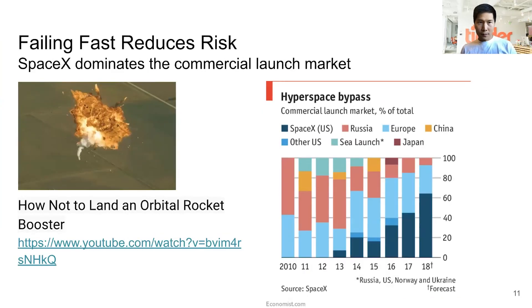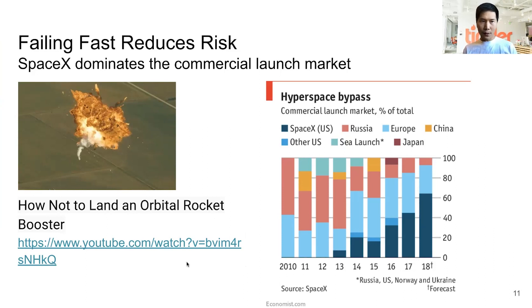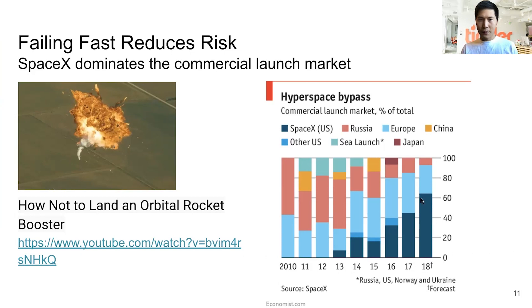Failing fast reduces risk. SpaceX now dominates the commercial launch market, but it took a lot of explosions and failed rocket launches to get there. They put together a compilation of all their rockets exploding in a great YouTube video. You can see in a graph from The Economist how their market share of the commercial launch market has been growing, essentially taking over from other launch providers.